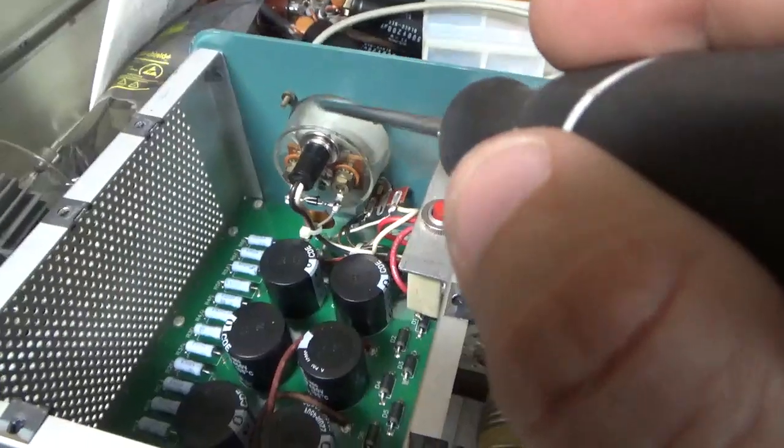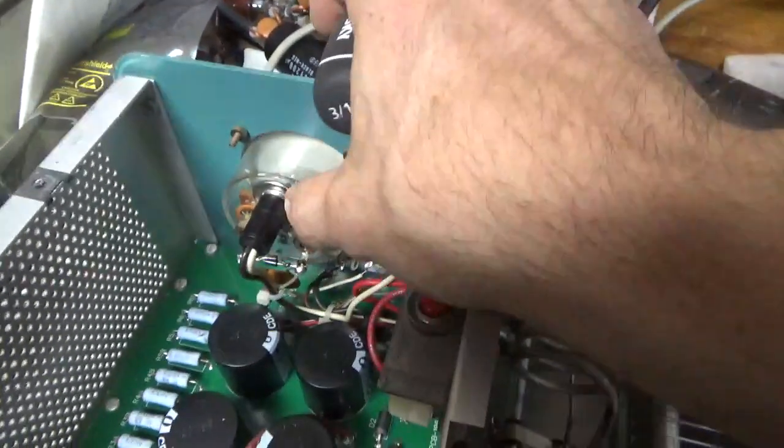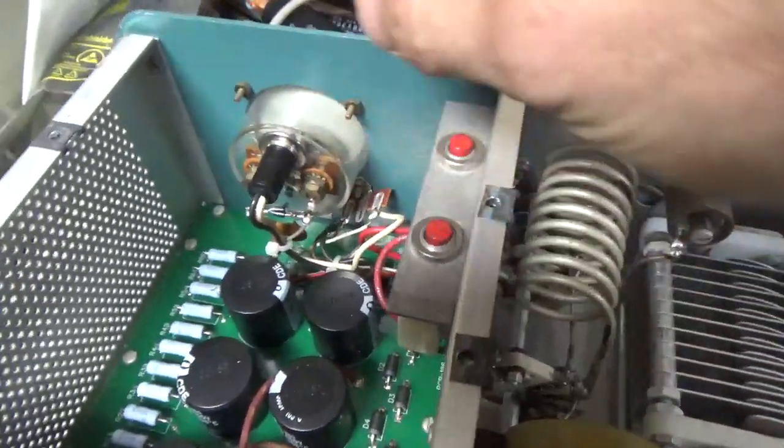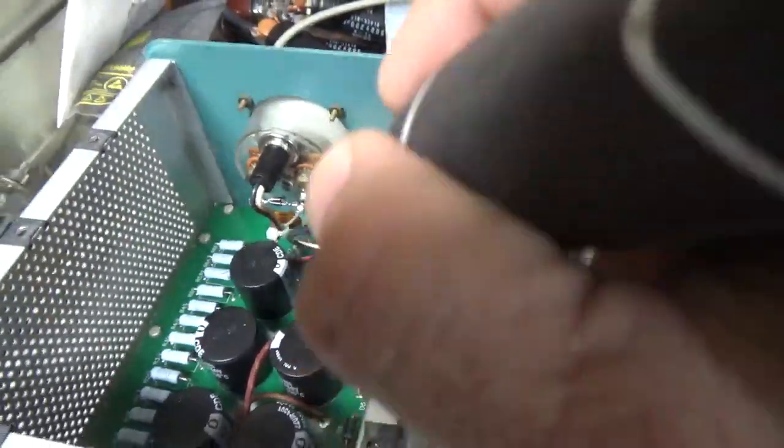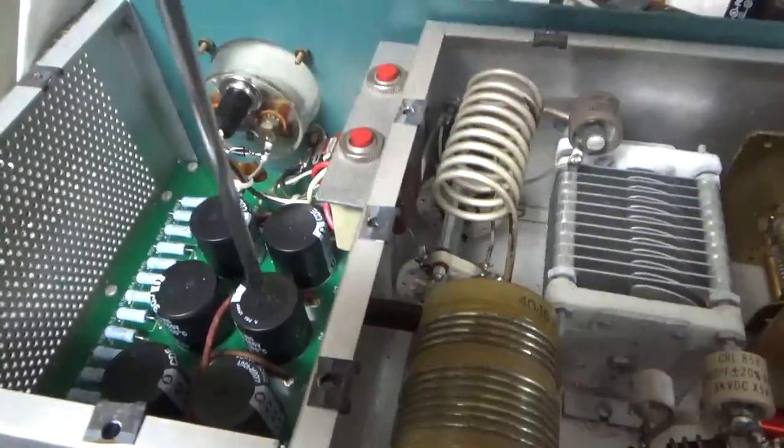I changed the meter lamp bulb, the clips that hold it in place, I spread them outwards, take the bulb out, spread them outwards, just so it's nice and snug, I zip tie it so this won't fall out and touch a high voltage point.